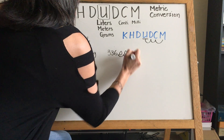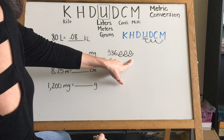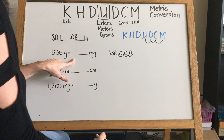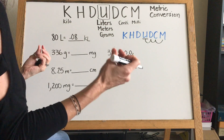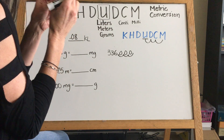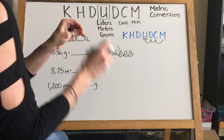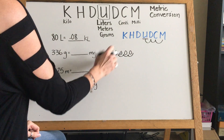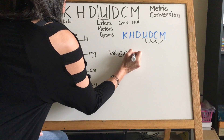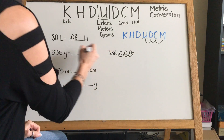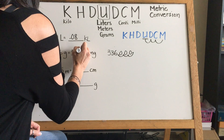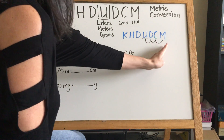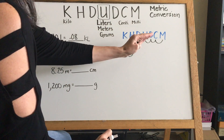We have to add three zeros. Our 336 grams turns into 336,000 milligrams, because milli is the tiniest measurement of grams we have. Going from grams to milli, that number is going to be much bigger — and it is, because once we move our decimal to the end, this became 336,000. Going left to right, we're multiplying by 10 each step, which makes our number bigger every time.